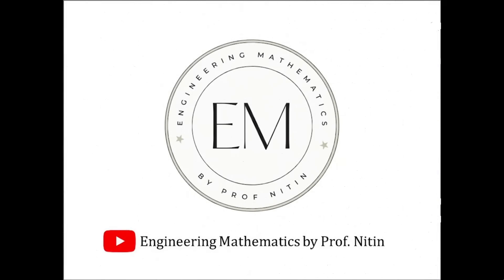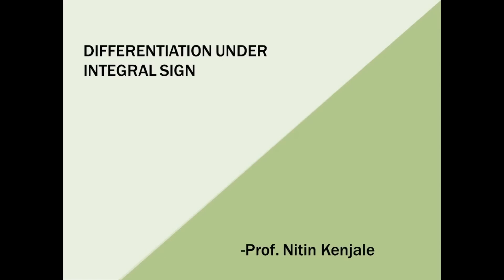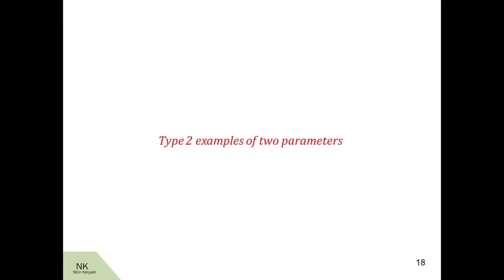Hello everyone. Welcome to my YouTube channel on Engineering Mathematics. This video is a continuation of my previous video in which we saw the technique of DUIS rule to solve integrals with only one parameter involved in its integrand. Now we see Type 2 examples in which the integrand will have two parameters involved in it. We solve these examples once again with the DUIS rule, that is differentiation under integral sign. So let us go ahead with the next example.